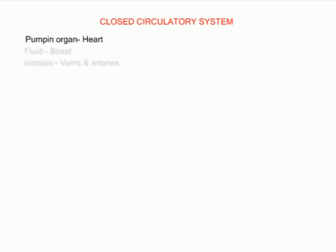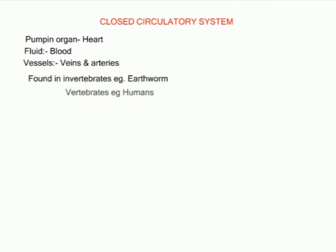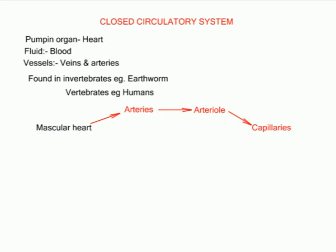In a closed circulatory system, there is a pumping organ called the heart, a fluid such as blood, and blood vessels — namely arteries and veins. The closed circulatory system is found in invertebrates such as earthworms and vertebrates such as humans. Blood is pumped by a muscular heart into arteries which divide to form smaller arterioles, which branch further to form capillaries. Capillaries form a dense network in body organs and tissues, allowing exchange of materials by diffusion. Capillaries join to form venules, which join to form veins that return blood to the heart. The closed circulatory system can be either single or double.